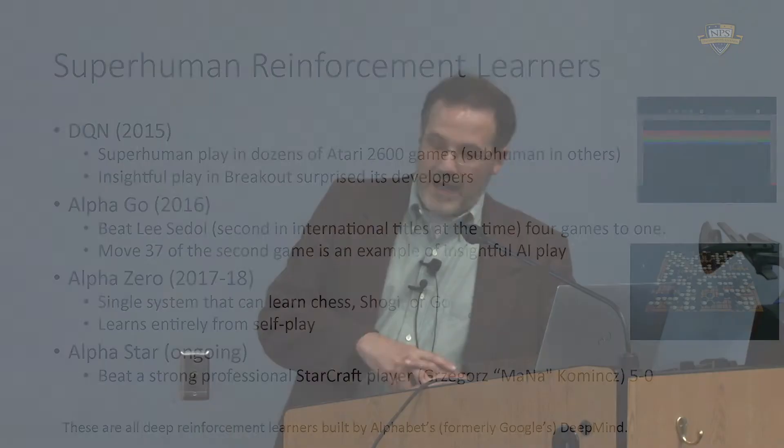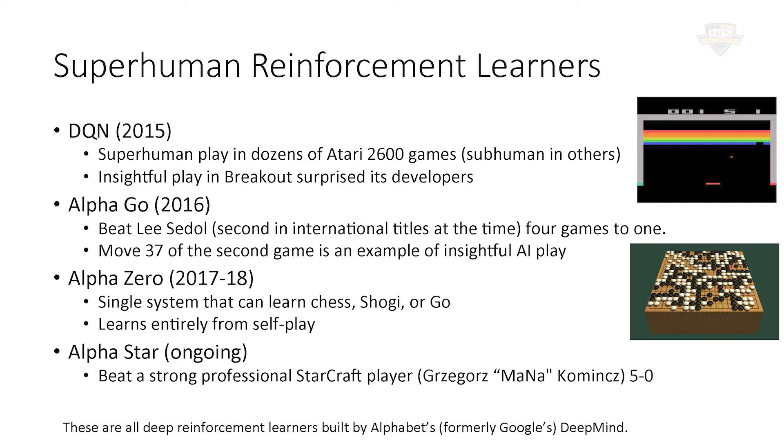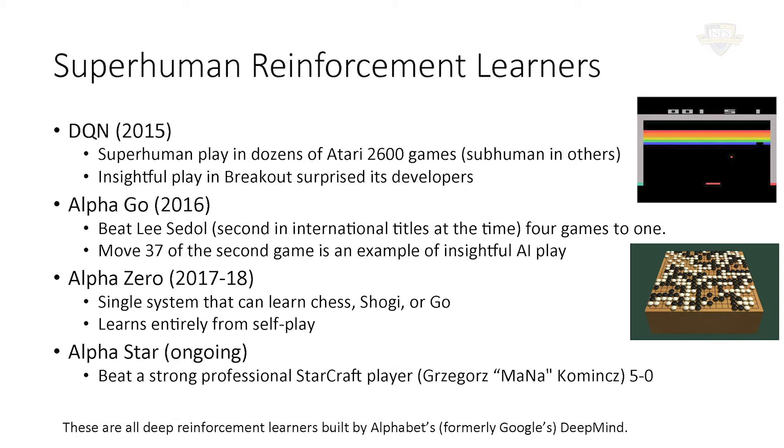Let's talk about some of the reinforcement learning examples you might have heard about in the news. I'm partial to the work of the DeepMind unit, which is a company founded in England, bought by Google, now held by Alphabet, Google's parent company. Starting in 2015, there was the DeepDQN system. It learned to play literally dozens of Atari 2600 games — not a state-of-the-art video game system — but for about two-thirds of the games it was able to achieve superhuman performance, though some it was just ridiculously bad at.